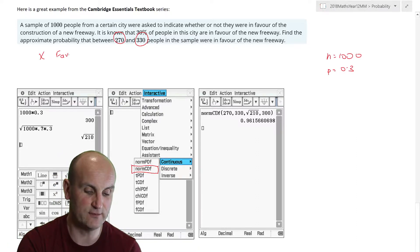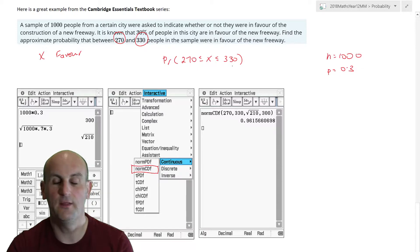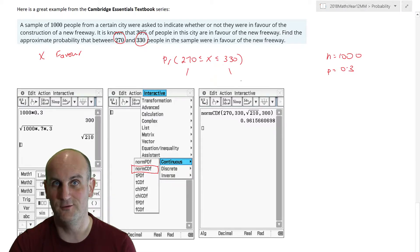Find the approximate probability that between 270 and 330 people in the sample were in favour of the new freeway. So X is basically stands for they're in favour. So I'm looking for the probability that X falls between 270 and 330 people. Well, there's a lower bound, there's an upper bound. Can I find my mu and sigma? Because I can now use my standard normal distribution, my normal distribution, to help me do this.